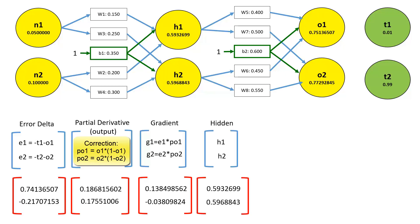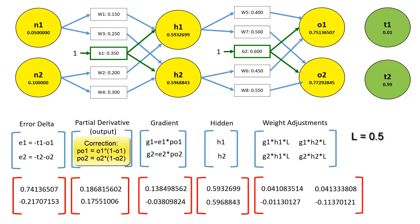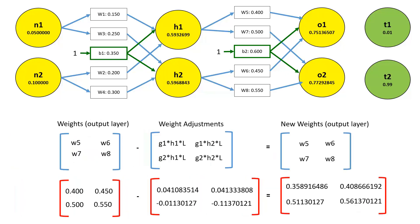As the hidden layer is the input to the weights that we're trying to adjust here, let's bring the hidden layer values in. Now we can calculate our weight adjustments as the gradient values multiplied by the input neuron values — in this case the hidden layer neurons — and then multiplied by our learning rate, which if you'll remember from our previous videos is 0.5. So when we subtract our weight adjustments from the existing weights for W5 through W8, we get the new values for those weights. And if you refer back to our earlier videos, you'll see that the values match, thereby confirming our results here.